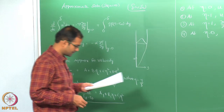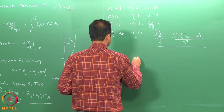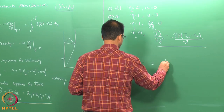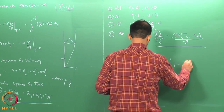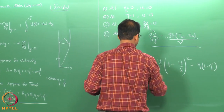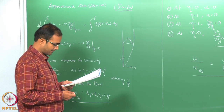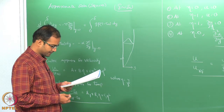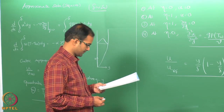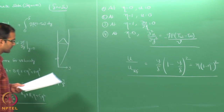Substituting the 4 boundary conditions and finding the 4 constants, the final velocity profile comes out as u/u_ref equal to eta·(1 - eta)² — where the factor is (1 - eta) the whole square — after all the manipulation. The term should be (1 - eta) squared, which is correct.